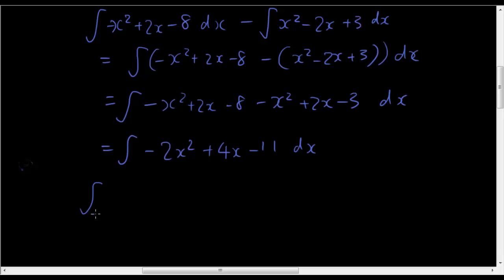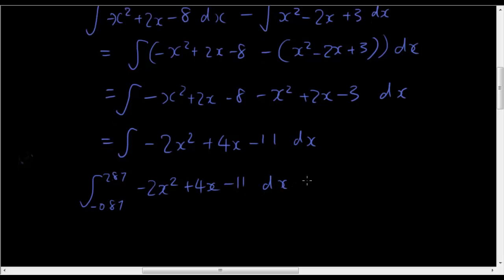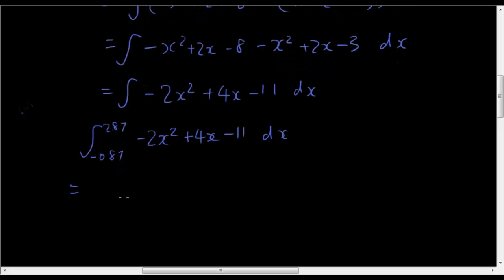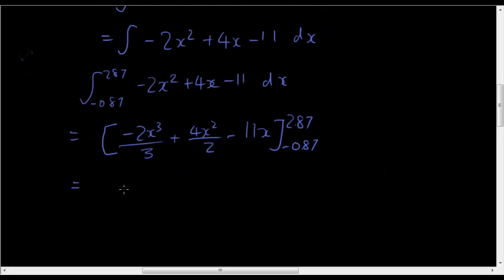So let's now find the definite integral from negative 0.87 to 2.87 of the equation negative 2x squared plus 4x minus 11 dx. So now the integral of this is equal to negative 2x cubed over 3 plus 4x squared over 2 minus 11x, 2.87 subbed in minus negative 0.87.